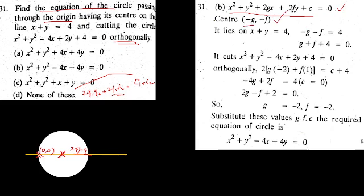Therefore the center is minus g, minus f. Since the circle is passing through the origin, substituting x equal to 0, y equal to 0, all terms go to 0, so c is equal to 0. The constant is 0. The center of the circle lies on x plus y equal to 4, so we substitute the center value: minus g plus minus f equals 4, that is g plus f equal to minus 4.